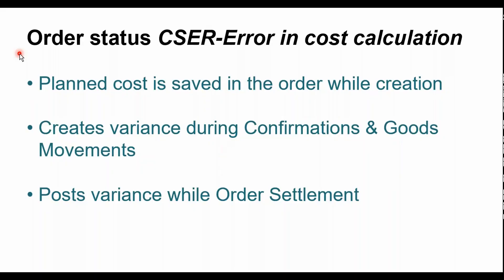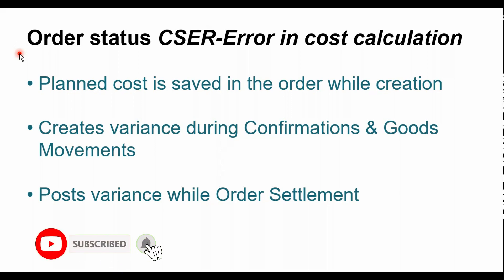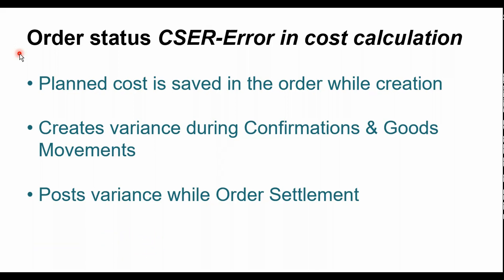Usually when you start creating a production order or a process order — whether it's a direct creation or a conversion from a planned order — sometimes you would see the system status CSCR. This means there is an error in the cost calculation of the product that you are going to manufacture in the order.